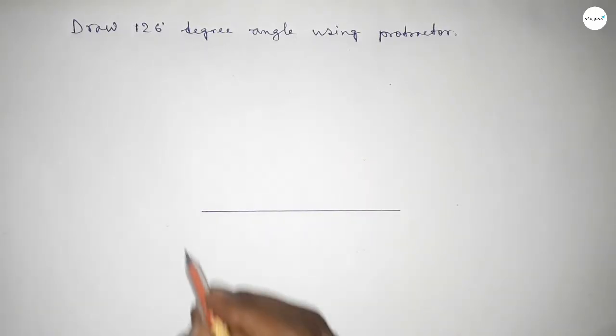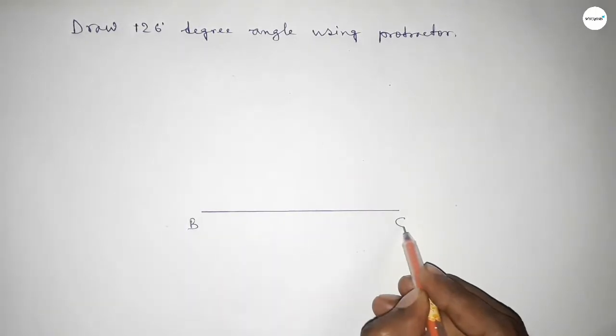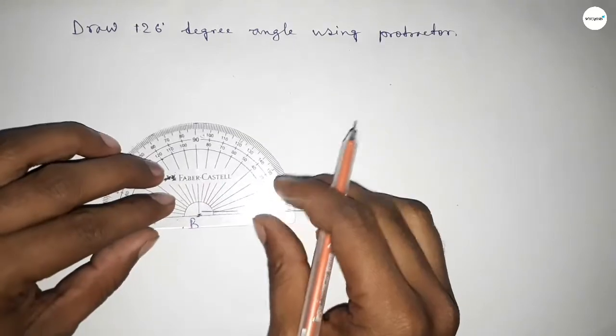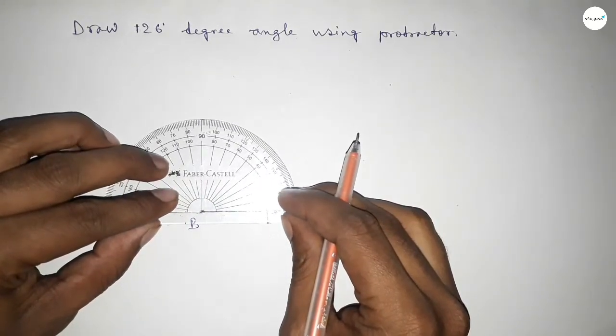Next, taking here point B and here C. Now putting the protractor on the point B perfectly.